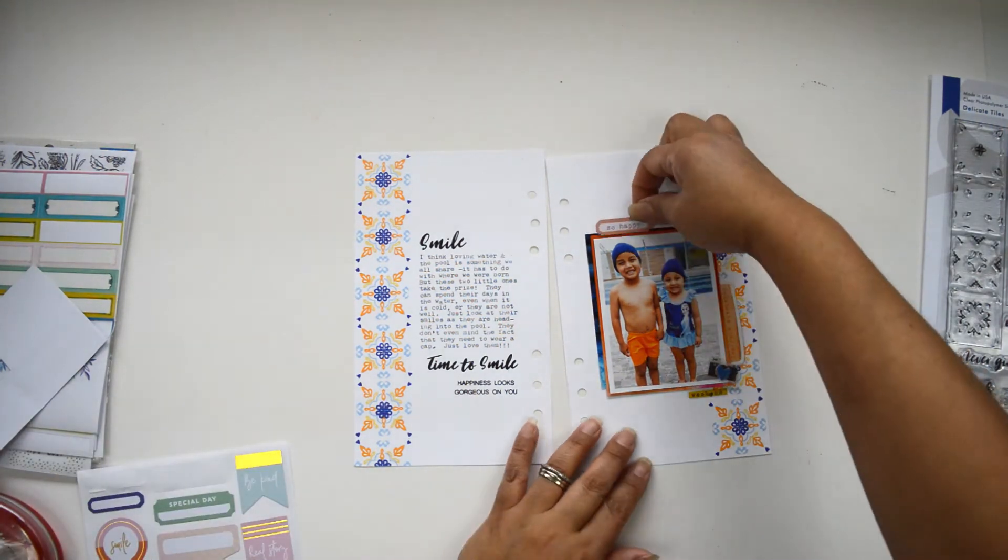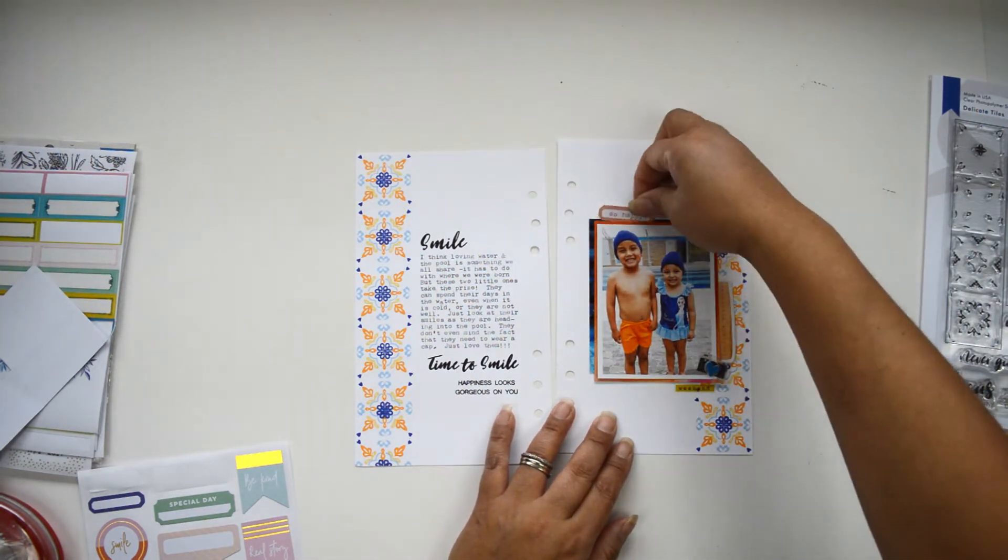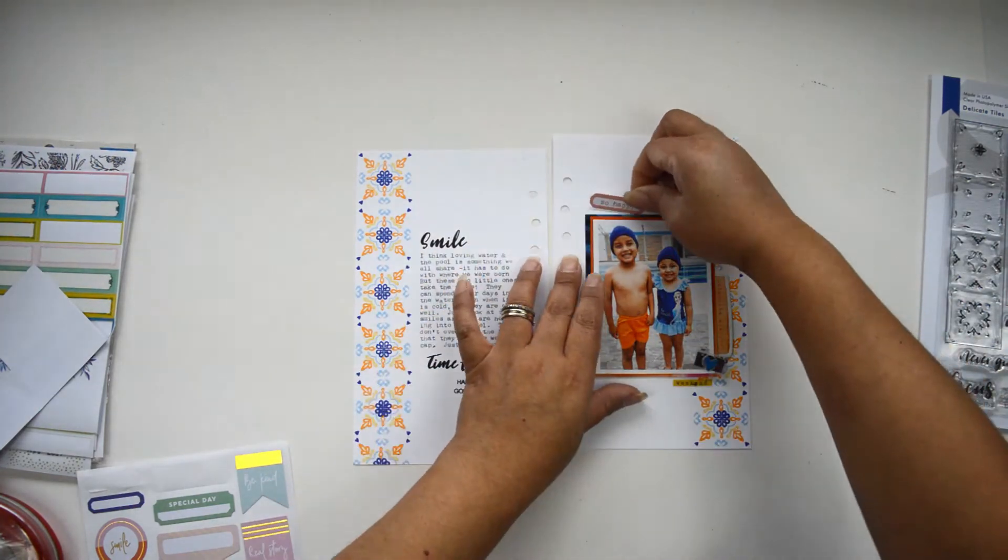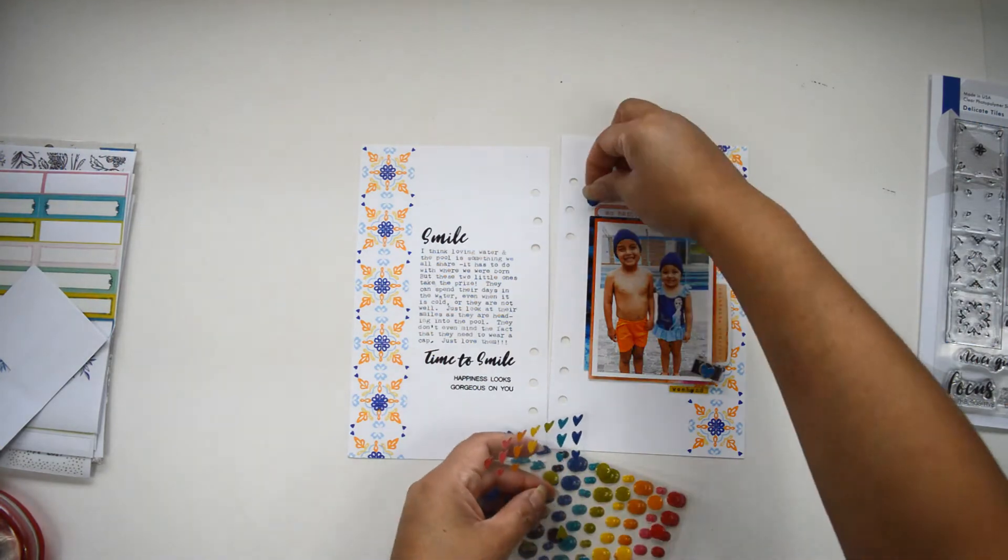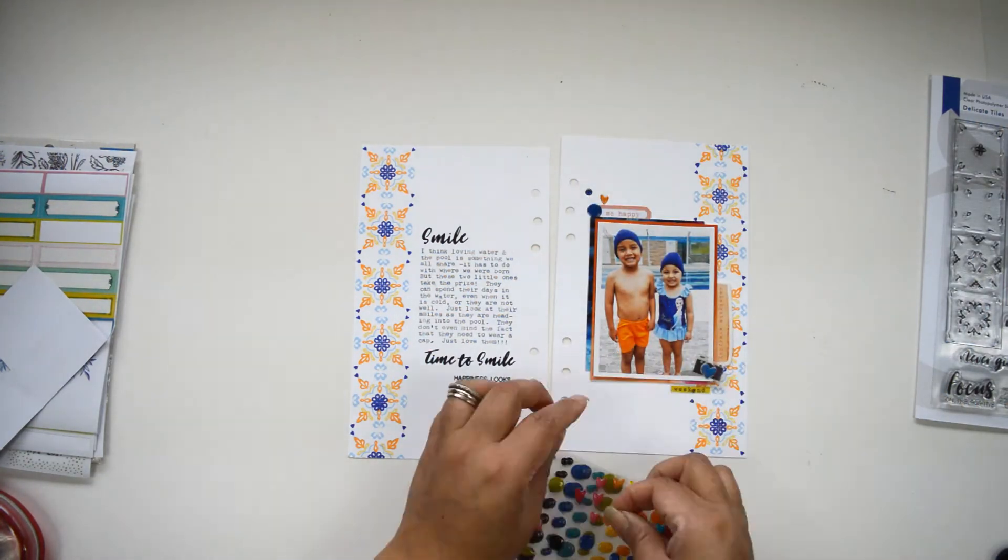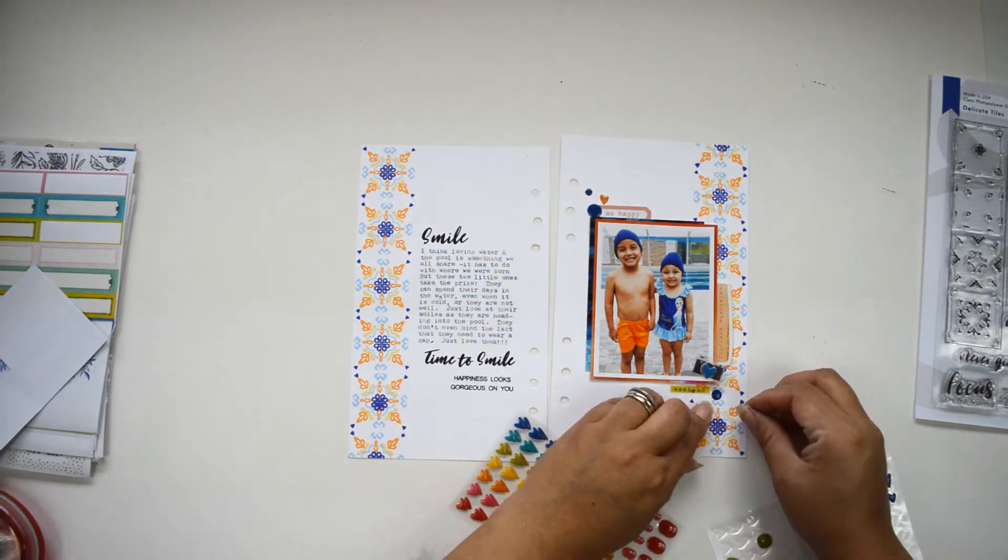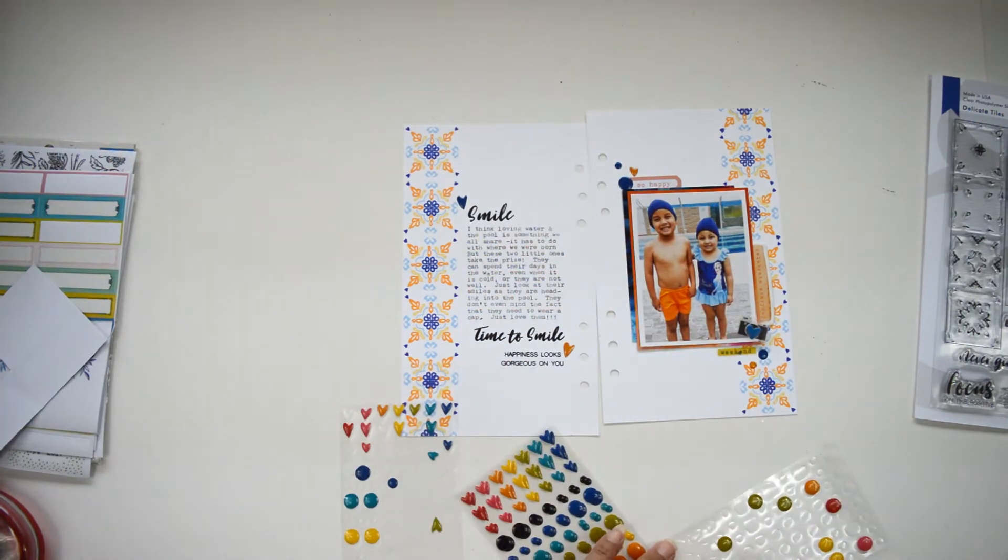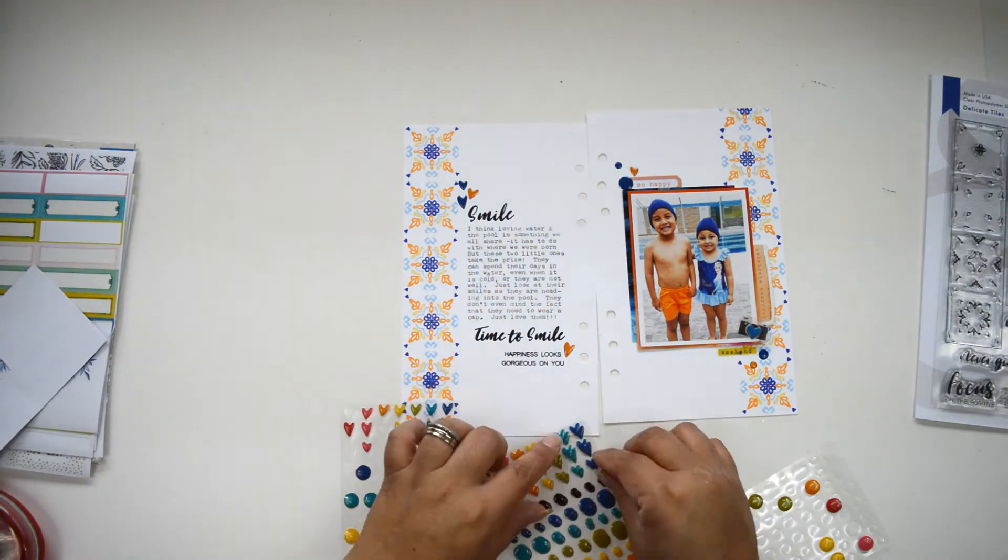To finish the cluster at the bottom right corner of the picture, I'm going to bring some more of the stamping of the sentiments from the Delicate Tiles stamp set. I'm going to use Black Obsidian ink just because I want to bring some of the black that I have on the typing and on the title on the left-hand side onto the right-hand side. After that, I'm going to add a few enamel dots. This I had in my stash, and I'm looking for everything that had that electric blue called Sapphire and some of the orange.